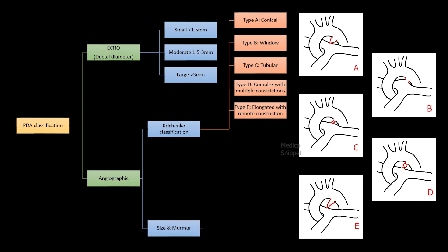The size of PDA is the smallest ductal diameter measured on lateral view. When the size of PDA is less than 1.5 mm without murmur, it is called silent PDA. With murmur, it is called very small PDA.